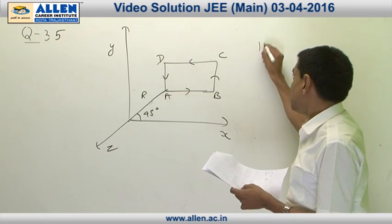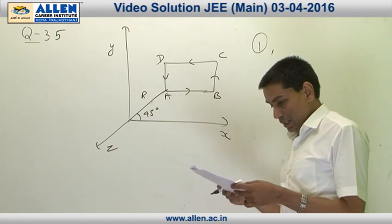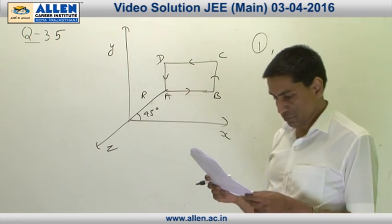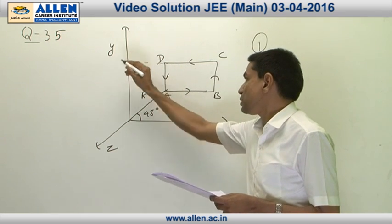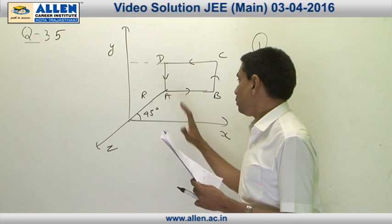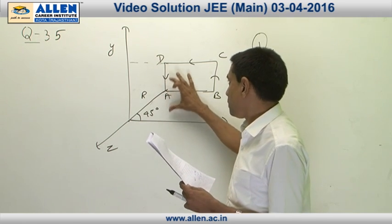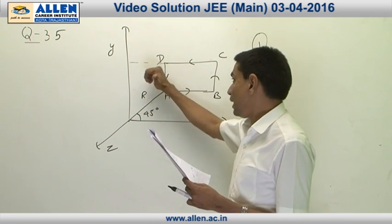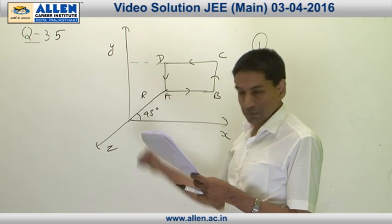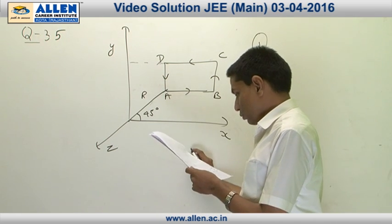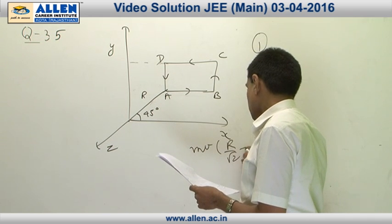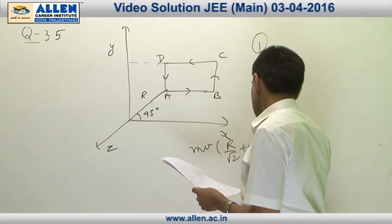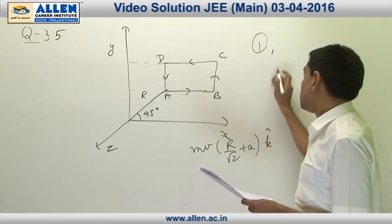The first is wrong and secondly, if we look at the third option, when the particle moves from C to D, then the angular momentum about the origin - the perpendicular distance is R by root 2 plus A. That angular momentum will be in the positive k-cap direction. That angular momentum comes out to be MV multiplied by R by root 2 plus A in the plus k-cap direction. So, third is also wrong.